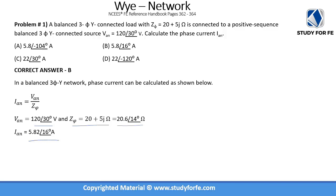Students can make a mistake here by ignoring phase angles. Even though in the vector diagram V_AN was along the x-axis at zero degrees, if the phase angle becomes 30 degrees it will rotate, and there is still an additional 30-degree phase shift between line voltages and phase voltages. Make sure you give due attention to phase angles, because in some problems they are the deal breaker — you may see two answers whose only difference is the phase angle.